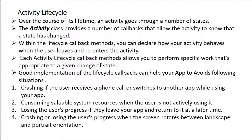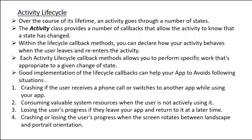Fourth, crashing or losing the user's progress when the screen rotates between landscape and portrait orientation. This picture represents all the lifecycle callbacks of an activity. When we launch an activity, the first callback method is onCreate — the Android system calls the onCreate method.